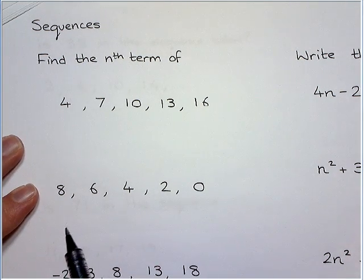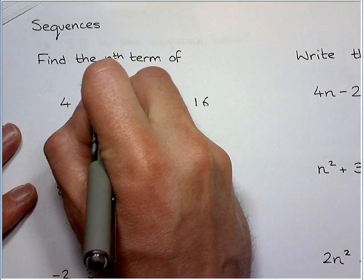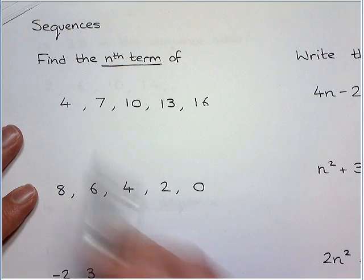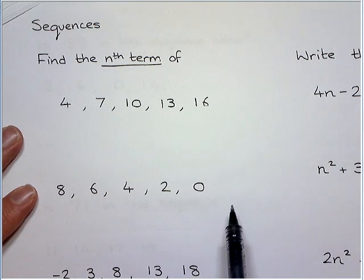Now we're going to take a look at sequences and what they often ask you to do is find the nth term of something. Dead easy, it's just the times tables basically. The only thing you need to spot is what times table they're linked to.